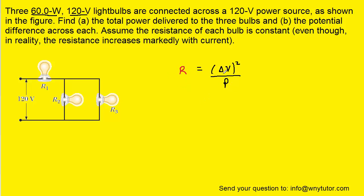And now we can plug in the known values of the potential difference, which was again 120 volts, and the power, which was 60 watts. And when you calculate that, you should get approximately 240 ohms for the resistance of each of the three bulbs.